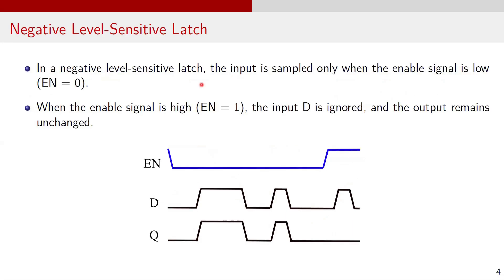In a negative level sensitive latch, the input is sampled only when the enable is low, or EN equals 0. When enable signal is high, the input D is ignored and the output remains unchanged. In the timing waveforms, when the enable signal is 0, output Q follows the input D. When enable goes to 1, output Q holds its previous value.